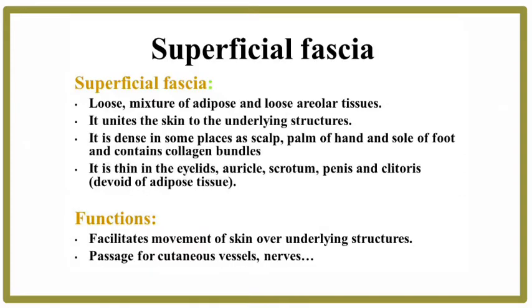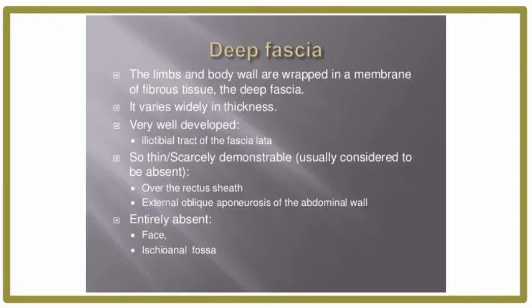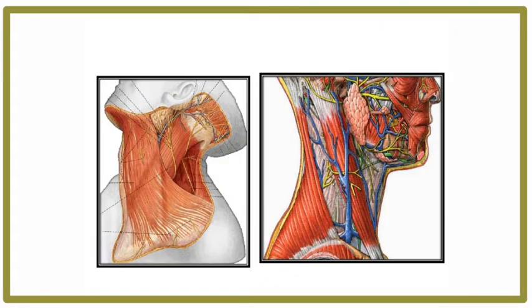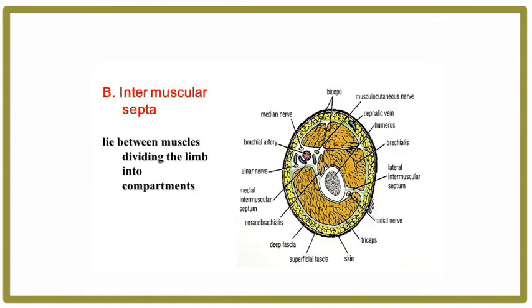The superficial fascia, also called subcutaneous tissue, is a mixture of loose areolar and adipose tissue that unites the dermis to the deeper fascia. Deep fascia is a dense layer of connective tissue that covers muscle and other deep structures. In the neck, this fascia forms a well-defined layer that may play an important role in determining the path taken by a pathogen during the spread of an infection.